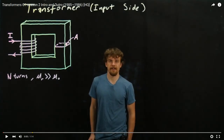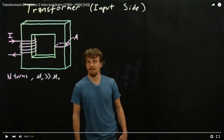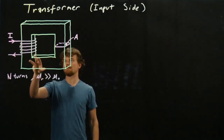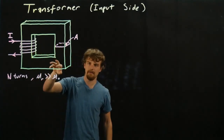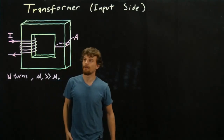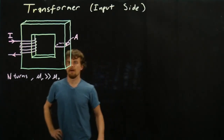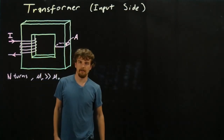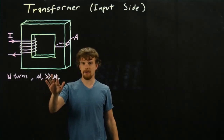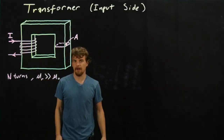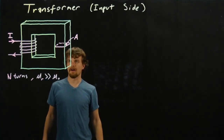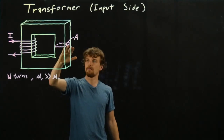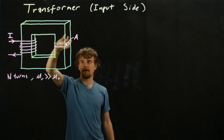Hi, my name is Zach with HKN, and today we are going to make a video about transformers. What we have here is a little core that we built, and we have a wire carrying current wrapped around one edge of it. We're going to assume this whole core is made out of some material that has a magnetic permeability much higher than the permeability of free space. We'll also assume it has a consistent cross-sectional area A everywhere.